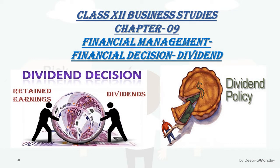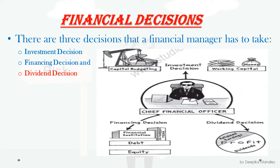Hello students, welcome to your business studies class. Today we will be discussing the dividend decision, which is the third decision under the financial decision. We know that there are three decisions a financial manager has to take. We had already discussed the investment decision — where to invest — and the financing decision — from where to procure or raise funds, either from debt or equity. Now we will be discussing the dividend decision, which is the third decision.